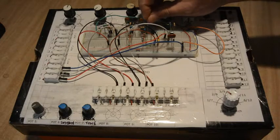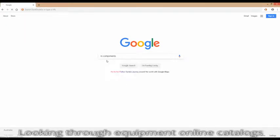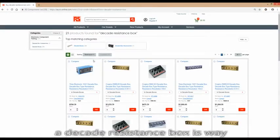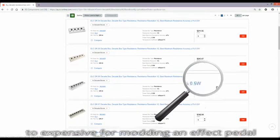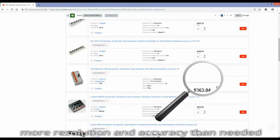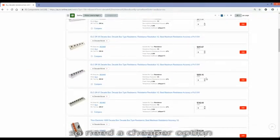A decade resistance box would be ideal for this. However, looking through equipment online catalogs, a decade resistance box is way too expensive just for modding an effect pedal. These have much more resolution and accuracy than needed simply for this, so I need to look for a cheaper option.